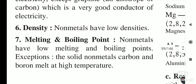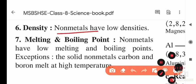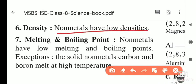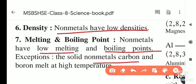Non-metals have low density. For example, coal floats on water, and wood also floats. Regarding melting and boiling points, non-metals have low melting and boiling points. Exceptions are solid non-metals like carbon and boron, which melt at high temperatures. All other non-metals have low melting and boiling points.